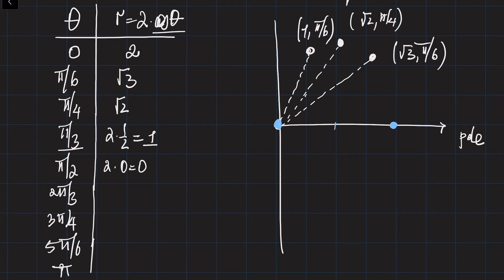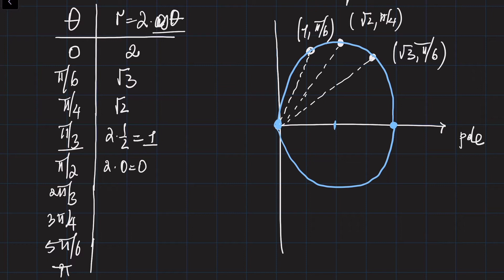Continuing these points, you can see this is going to look very much like a circle. If you continue, you get a similar shape on the downside as well. It turns out to be a circle with center at the point (1, 0) in rectangular coordinates — which looks quite strange as a polar equation.